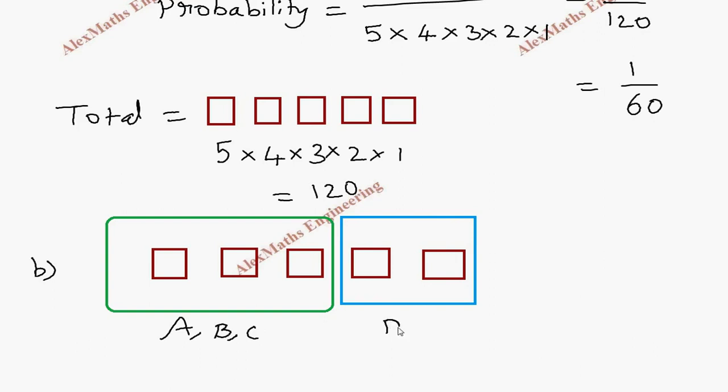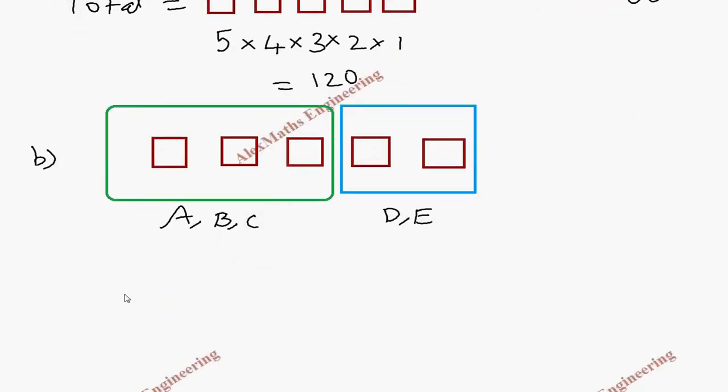So the probability will be: to occupy in such a way, here we have three places and three elements, so that can be occupied in 3 factorial ways. And two places and two elements can be occupied in 2 factorial ways. And total probability, already we have discussed, it is 120.